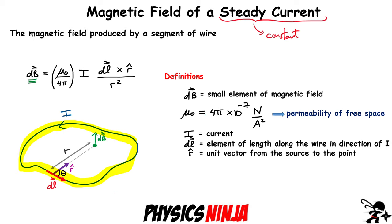In the numerator there are two vectors. The vector dL is a particular element of length along the direction of the current — it's a vector with units of meters. The last term is r-hat, a unit vector with magnitude one. Its direction goes from the element dL to the point of observation, shown as the purple vector in the diagram.